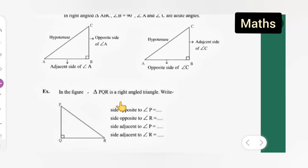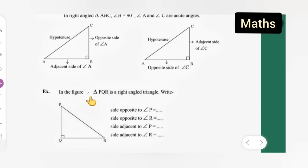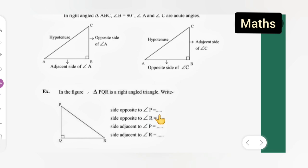Now let us solve the exercise. In the figure, triangle PQR is a right angle triangle. The side opposite to angle P is QR. The side opposite to angle R is PQ.